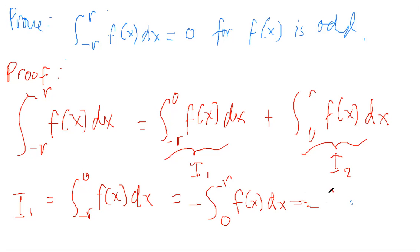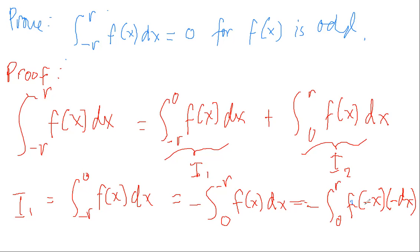So this becomes negative the integral of f(negative x) with respect to negative x, which gives negative dx, from 0 to r — since we've placed the negative signs on the value of x in the domain. To simplify this, let's proceed to the next slide.